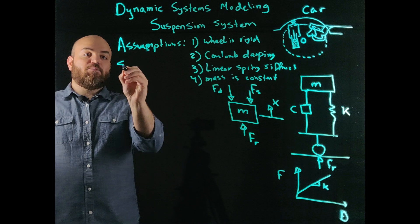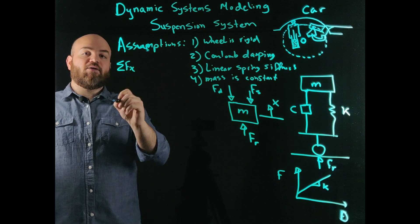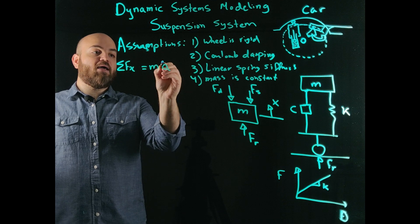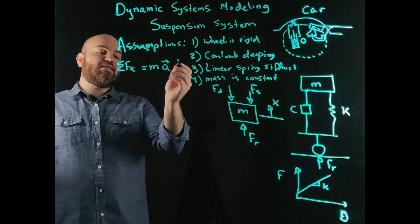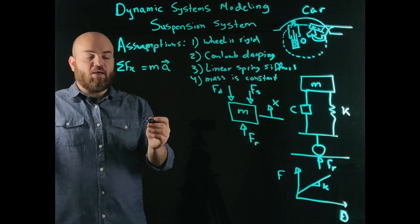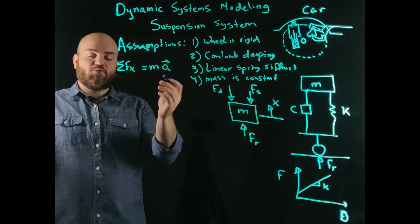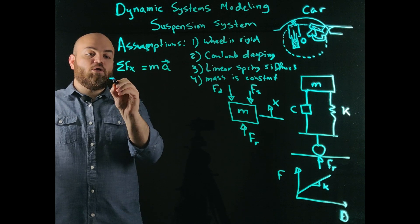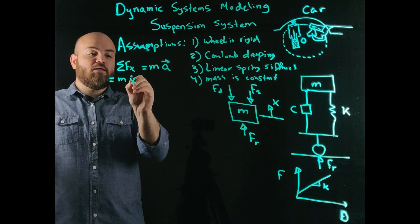So we say summation of forces in the x direction is going to be my mass multiplied by my acceleration vector. In this case, it's really a scalar. This is one direction, but it's not really a scalar. It's a vector in one direction. Anyway, you get the point, which is equal to Mx double dot.